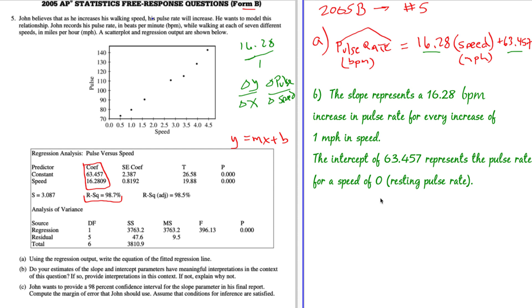So the intercept of 63.457 represents the pulse rate for a speed of zero. That is what we call a resting pulse rate, but pretty sure you don't need that, by the way. Beats per minute. All right, let's include our units. Miles per hour. All right, lastly, I think we did B pretty well. Lastly, John wants to provide a 98% confidence interval for the slope parameter in his final report.